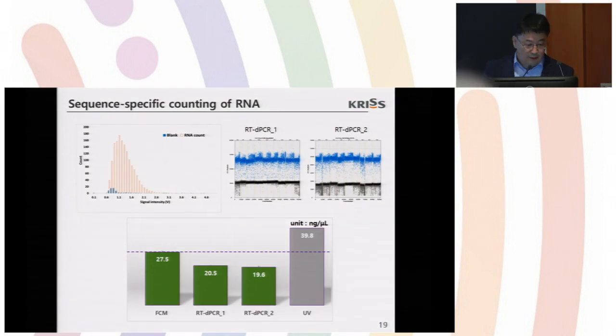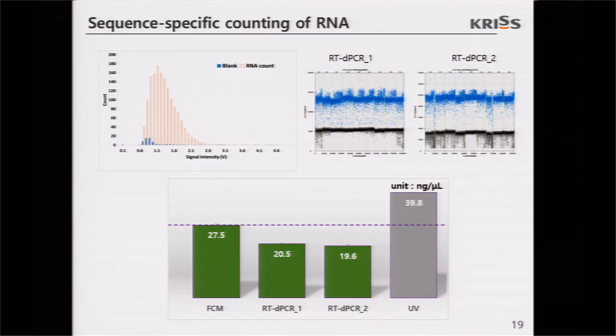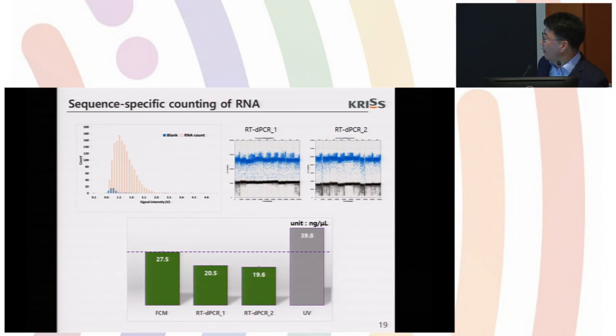Anyway, this is the final results. You can see counting data here, a positive signal and blank signal in blue, and results by reverse transcription mediated dPCR assay one, assay two, and they were compared with the results from UV. Actually, we performed mass spectrometry, but it was not completed yet, so the mass data is not provided here. And you can see small difference between counting and dPCR assays. I think it is due to reverse transcription. And this disagreement is due to fragmentation.